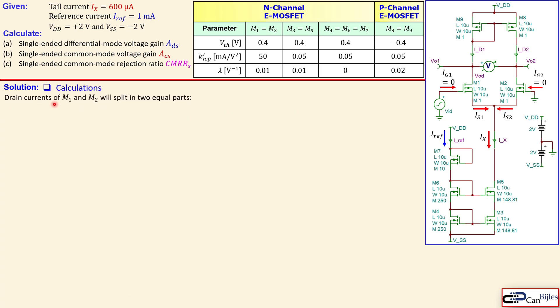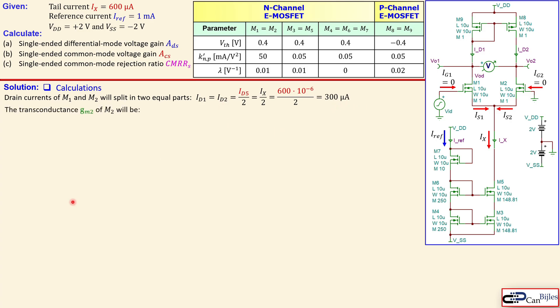The drain currents of M1 and M2 split into two equal parts, so ID1 = ID2 = ID5/2 = Ix/2. Since Ix = 600 µA, ID1 and ID2 are each 300 µA.